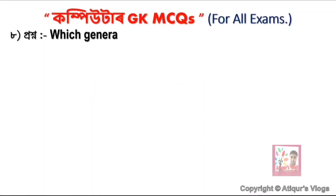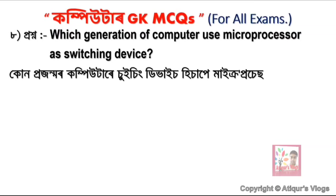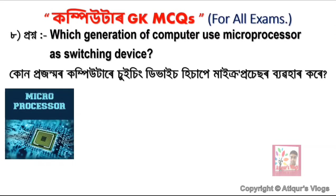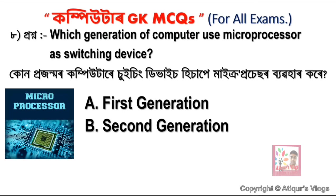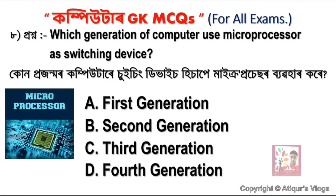Question 8: Which generation of computer uses a microprocessor as a switching device? Options are: option A First Generation, option B Second Generation, option C Third Generation, and option D Fourth Generation. Option D is correct — Fourth Generation computers use the microprocessor as a switching device.